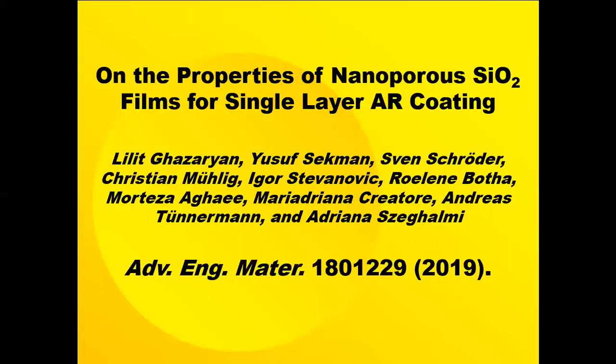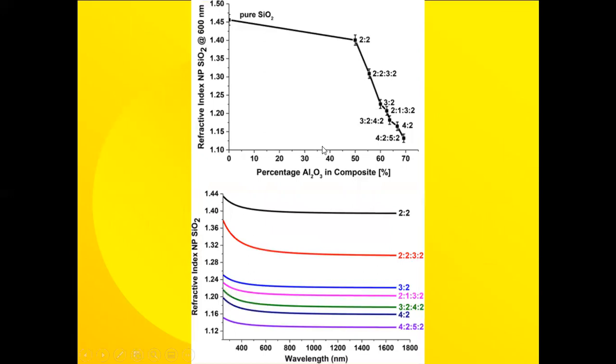This interesting paper in recent years by the group in Jena, they've done something to help solve our problem of the need for a very low index. Here's a couple of figures from that paper where they'll put down a couple of layers of SiO2 atomic layers and a couple of layers of aluminum oxide.